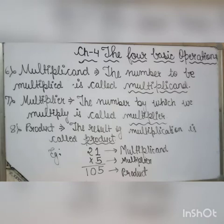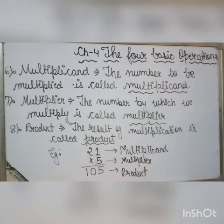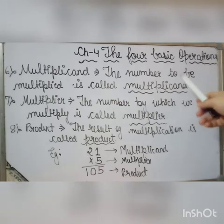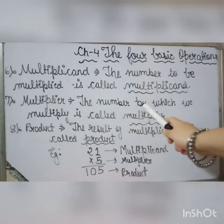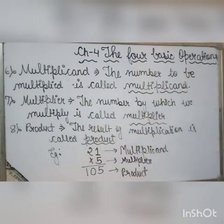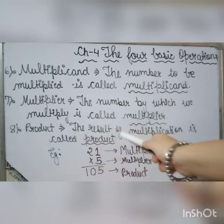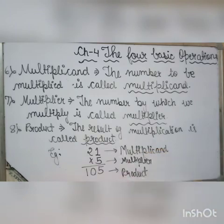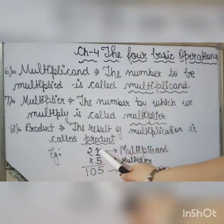The sixth basic concept is multiplicand — the number to be multiplied is called the multiplicand. The seventh concept is multiplier — the number by which we multiply is called the multiplier. The eighth concept: the result of multiplication is called the product.